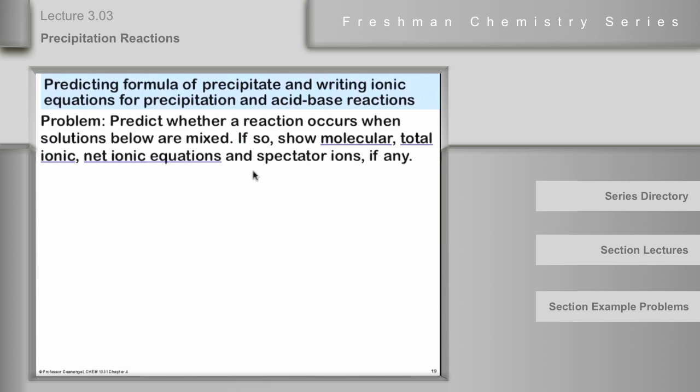We're going to try to predict the formula of the precipitate and write the appropriate ionic equations for precipitation and then later for acid-base reaction. Right now we'll do precipitation. Predict whether a reaction occurs when solutions below are mixed. And if so, show molecular total ionic net ionic equations and the spectator ions, if any. The first thing we've got is sodium sulfate and lead(II) nitrate. Sodium sulfate, if you know sulfate ion has two negative charges and sodium has one positive charge, you know the formula is Na2SO4. Likewise, lead(II) nitrate is Pb(NO3)2.